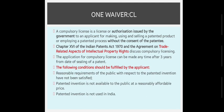Now let's talk about compulsory licensing, which is a kind of waiver. A compulsory license is a license or authorization issued by the government to an applicant for making, using and selling a patented product, or employing a patented process, without the consent of the patentee.